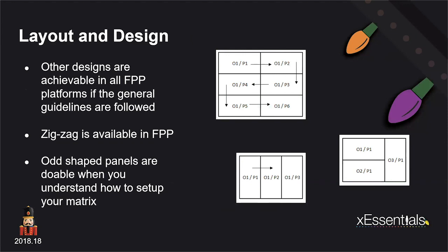The zigzag layout is available inside FPP. In this panel, output one, panel one goes to output one panel two, and it zigzags like a snake back and forth using just one output. There's also a daisy chain pattern where data enters at the top, goes through one panel, then exits down to the next. FPP supports a lot of different types of designs, scan patterns, and panel configurations. The layout and the controller you're using kind of go hand in hand.